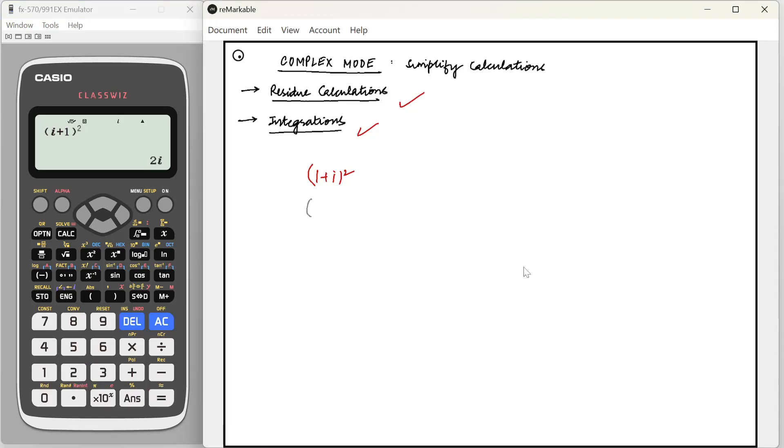Suppose we have to calculate one plus i cube. Now these calculations are very tedious because you have to remember that i cube is minus i and all that, there's high room for making a mistake.